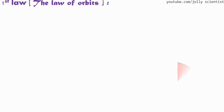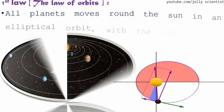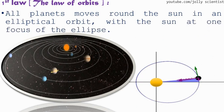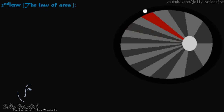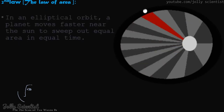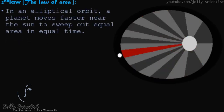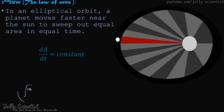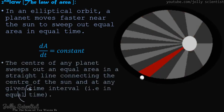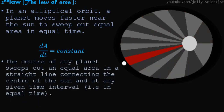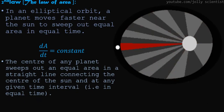The first law — the law of orbits: According to Kepler, all planets move around the sun in an elliptical orbit, with the sun at one focus of the ellipse. The second law — the law of areas: In an elliptical orbit, a planet moves faster near the sun and sweeps out equal areas in equal time. The ratio of area to time (A/T) is always constant; a line connecting the center of the sun and the planet sweeps equal areas in any given time interval.